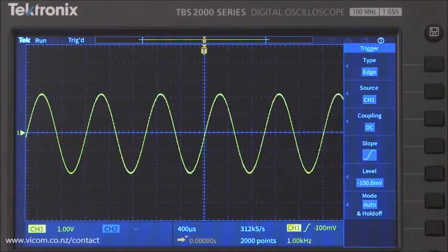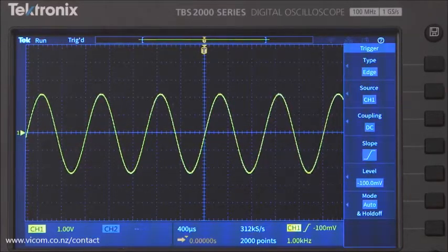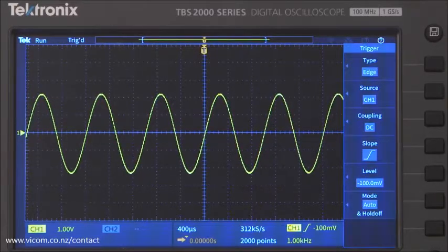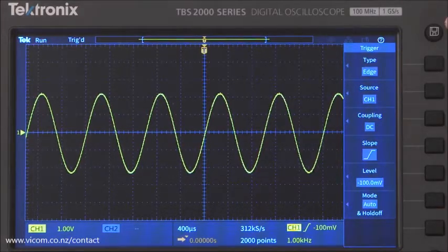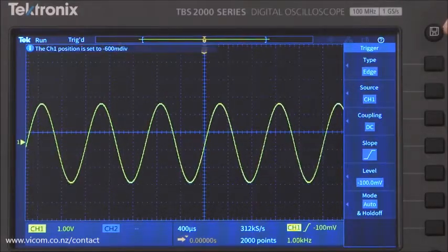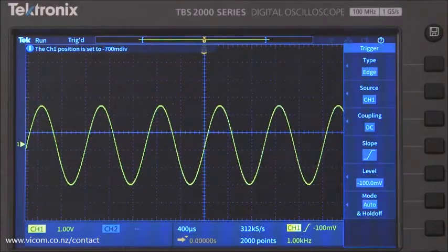For amplitude measurements, we count the number of vertical divisions occupied by the signal's vertical swing and then multiply by the vertical scale. Let's measure the peak-to-peak voltage of this signal. To make it easier to count the divisions, first shift the waveform using the vertical position knob to line it up on the bottom of one of the grids.